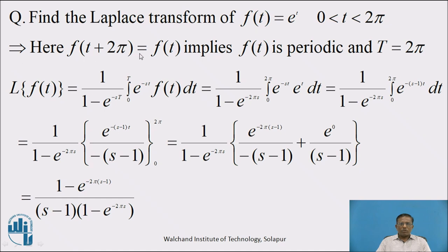The question is: find the Laplace Transform of f(t) = e raised to t for 0 < t < 2π. Solution: since f(t + 2π) = f(t), this implies the given function f(t) is periodic with period T = 2π. So we start with the formula of Laplace Transform of periodic function: 1 upon (1 minus e raised to minus sT) into integration with limit 0 to T of e raised to minus st times f(t) dt. Substituting T = 2π and f(t) = e raised to t: e raised to minus st times e raised to t equals e raised to minus (s minus 1) times t.